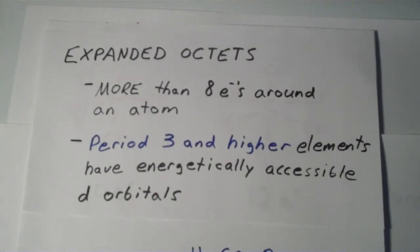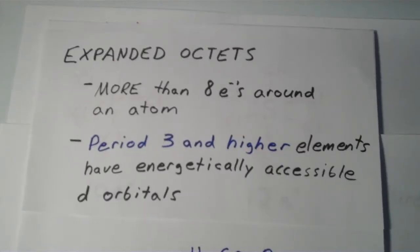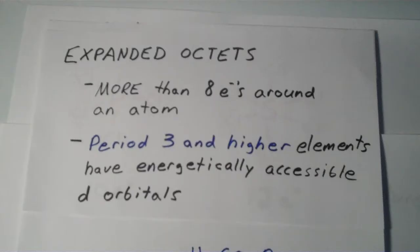Another important exception to Lewis theory involves expanded octets. An expanded octet is when an atom has more than 8 electrons surrounding it. These expanded octets are observed only in period 3 and higher elements because only these elements have energetically accessible d-orbitals.